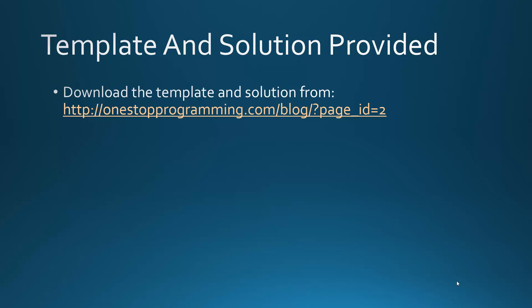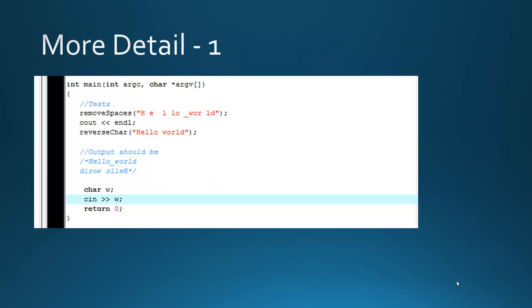A template file is provided — the link will be in the description. This is the main function where we test the `remove_spaces` function and the `reverse_characters` function. These should print the output shown below. Notice that I didn't include a test for the number of characters in the string — that's because you should use the `count_char` function as part of those two other functions.